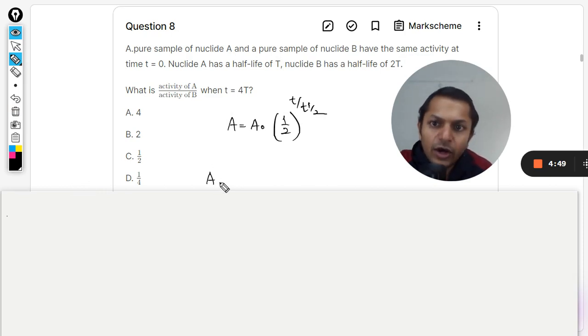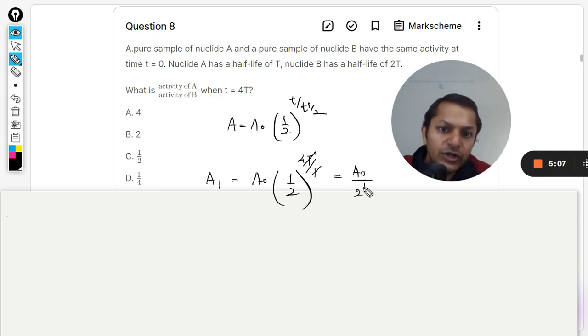So activity of A will be given by A₀ (I'm writing A₀ because it is same in both of the cases) times half raised to power 4t is the total time we were talking about, and for this the half life is t. So 4t divided by t, it becomes 4. So A₀ divided by 2 raised to power 4. 2 raised to 4 is 16, so A₀ divided by 16 is the answer.